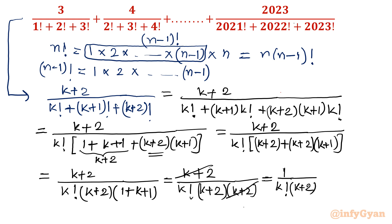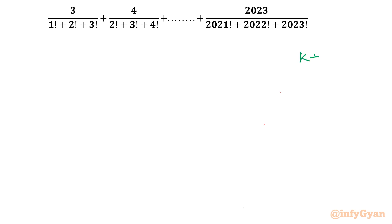Now I will multiply numerator and denominator by (k+1). See what it will do. Numerator becomes k! × (k+1), and denominator becomes k! × (k+1) × (k+2), which is (k+2)!. So shall I write (k+2)! in the denominator? Yes, we can write. Now I will write (k+1) over (k+2)!.